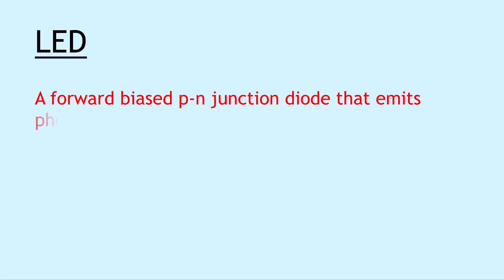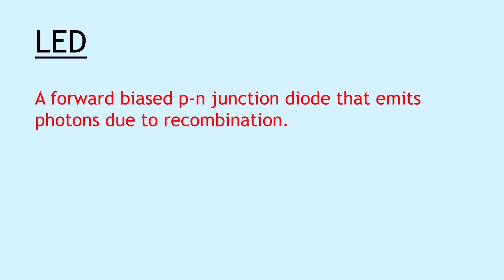Next we have LED, which stands for light emitting diode, and this is a forward biased p-n junction diode that emits photons due to recombination. Remember recombination is just the term given to when the electrons in the conduction band of the n-type material fall into the holes of the p-type material that are in the valence band, and this emits light in the form of photons.